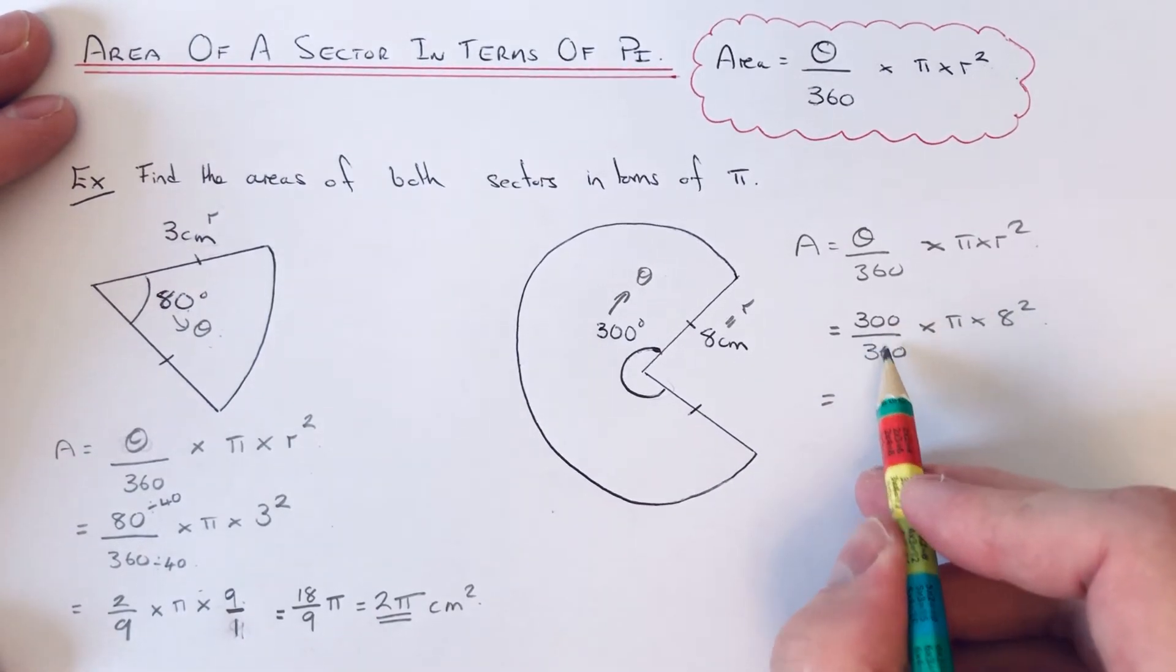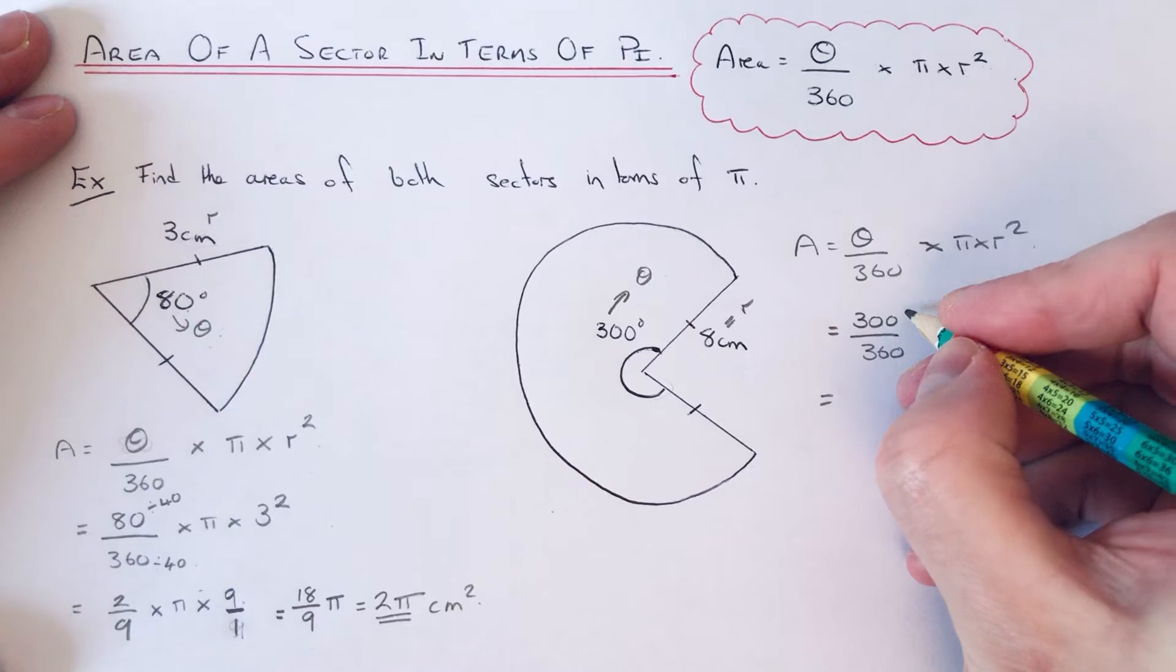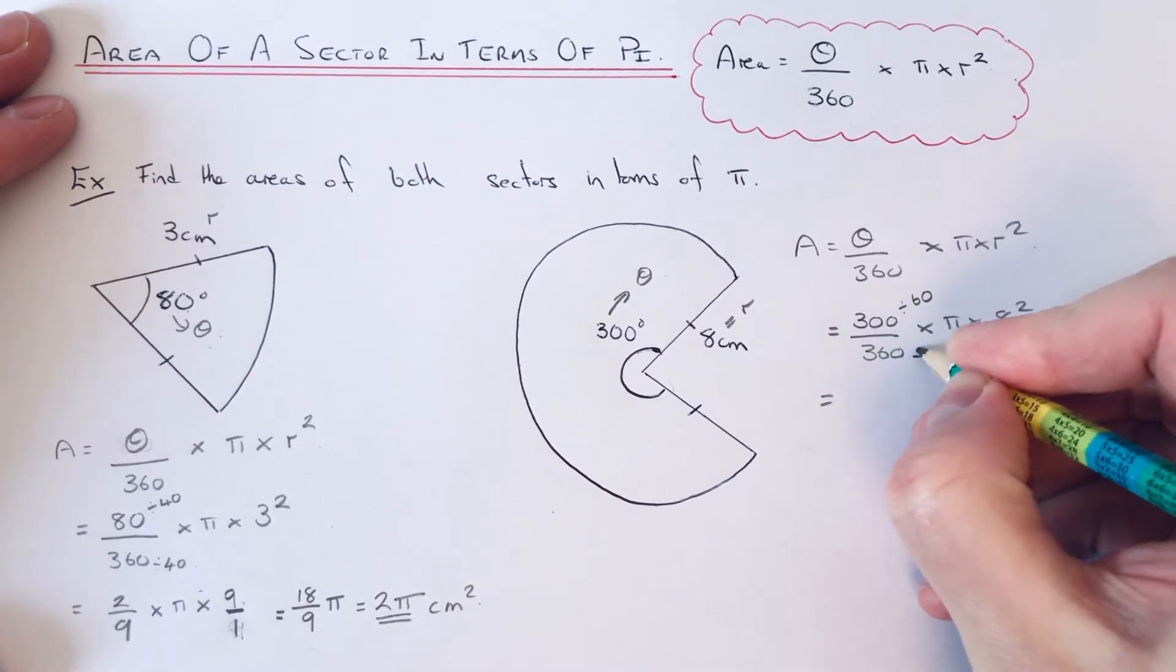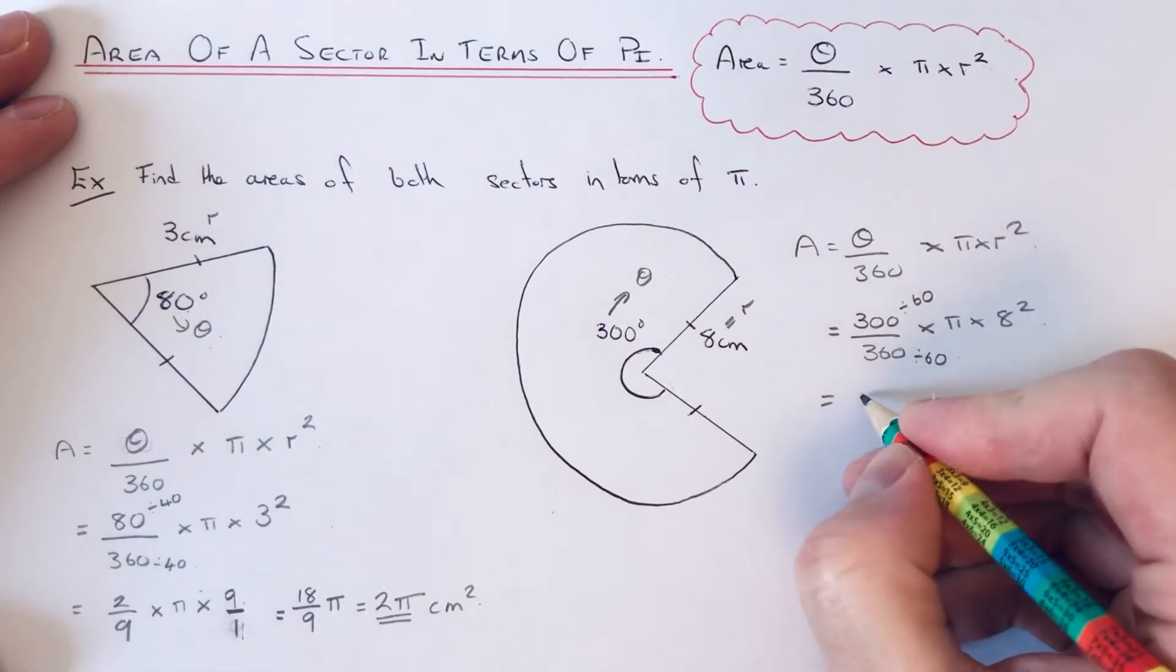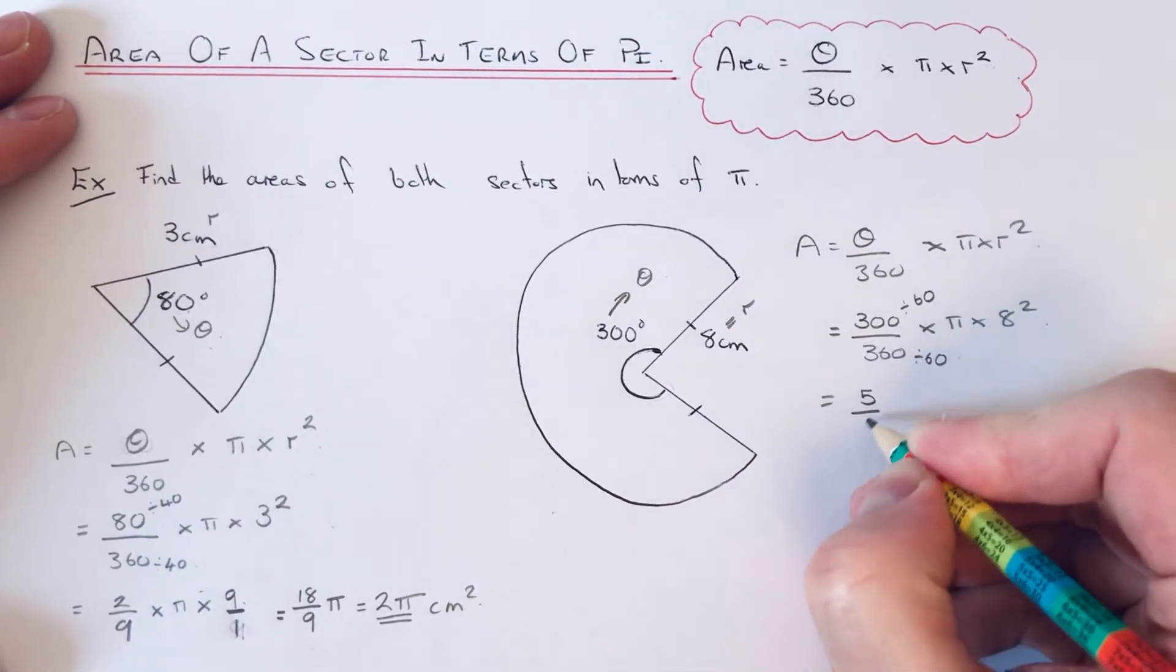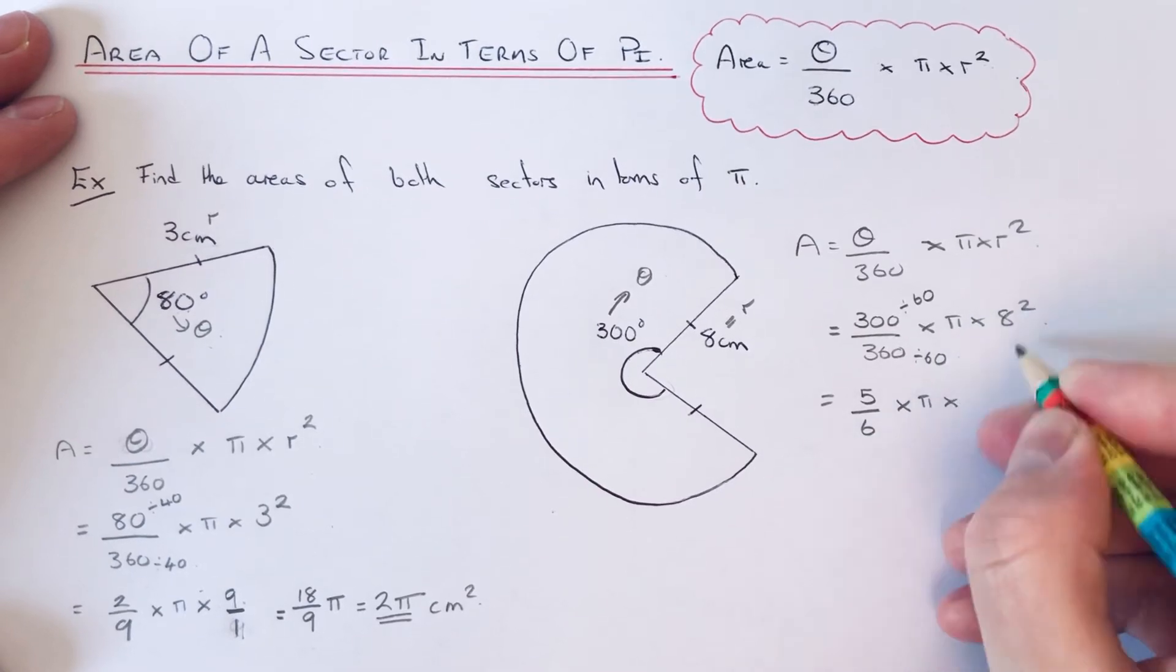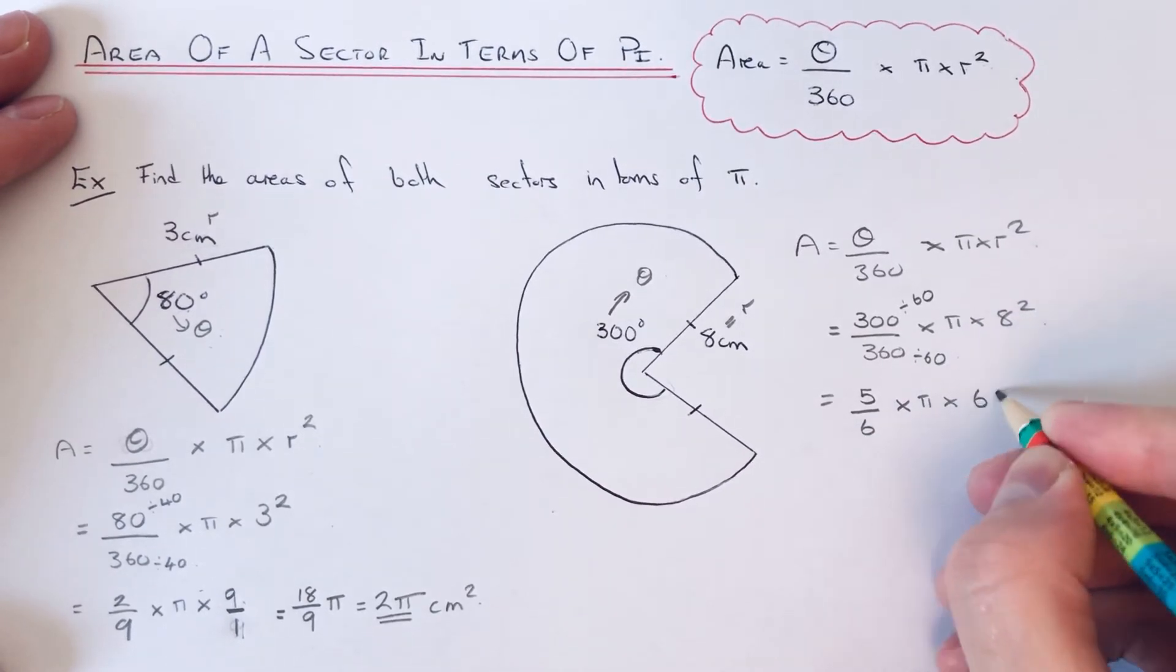So 300 over 360, we can divide the top and bottom by 60. That will give us 5 over 6. And then we've got times pi times 8 squared is 64.